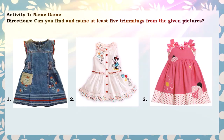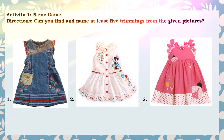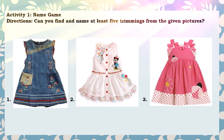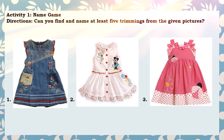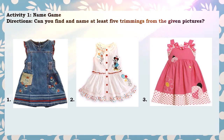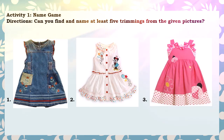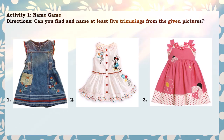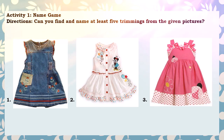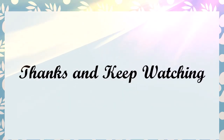Now let us answer the Main Game. As we already discussed the 7 trimmings, what are those trimmings? In picture number 1, you can see the pocket and the embroidery. In picture number 2, you can also see the appliqué and the ruffles. In picture number 3, you can see the ribbon, and also the appliqué. Hope you enjoy! Thanks and keep watching. Enjoy!